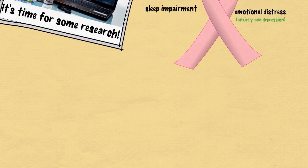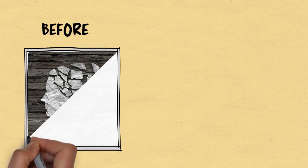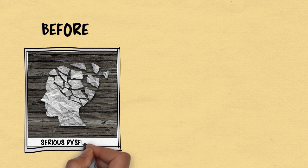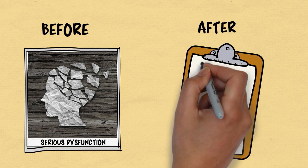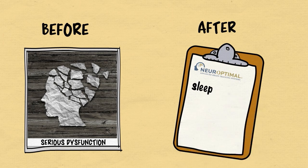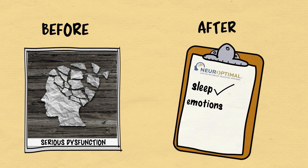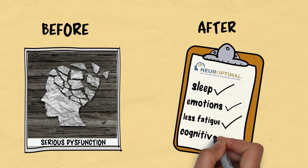So here's a quick summary. Before neurofeedback, the participants showed serious dysfunction on all measures compared with the normal population. But after 20 sessions with NeuroOptimal, our participants were similar to the normal population on the sleep measures, the emotional measures, the fatigue measure, and three of the four cognitive testing scales that we measured.